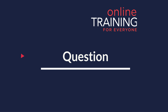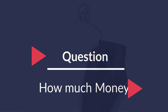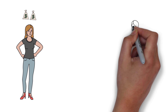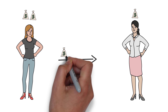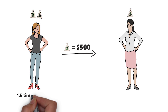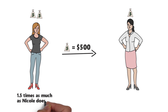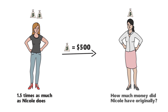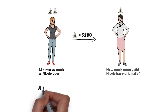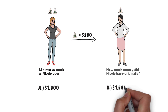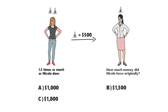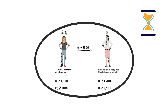Here is an interesting question which tests your understanding of money management as well as accounting. Sarah has twice as much money as Nicole does. After Sarah loans $500 to Nicole, she will have 1.5 times as much as Nicole does. How much money did Nicole have originally? You have 4 choices: Choice A $1,000, Choice B $1,500, Choice C $1,800, and Choice D $2,500. Give yourself 20 to 30 seconds — maybe pause this video. Let's move forward to get to the correct solution together.